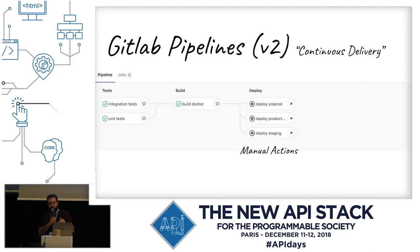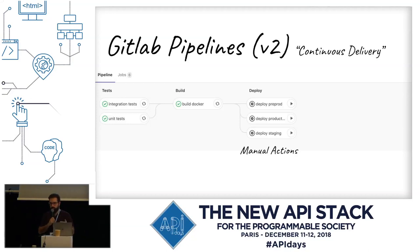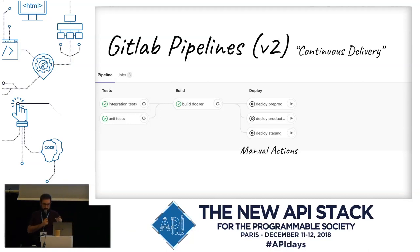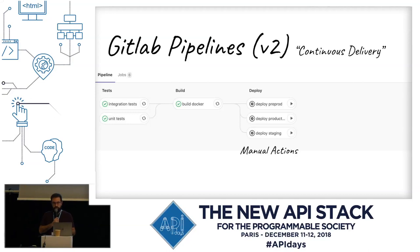The second step was continuous delivery. On each commit pushed to GitLab, we run integration tests and unit tests, then build the Docker image for production — on every push from anyone. At each point if the pipeline succeeds, we are ready to deploy on any environment. Using GitLab CI manual actions, we could choose to deploy manually on staging, preproduction, or production environments. This was still a manual process, but at least we were delivering each time a new container ready to be deployed to production.